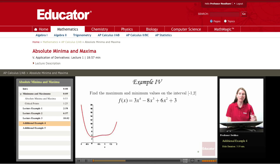Welcome to Educator. We are in the calculus one sequence looking at absolute maximum and minimum values, and here we have a polynomial and we'd like to find its maximum and minimum values on the interval negative one to two.